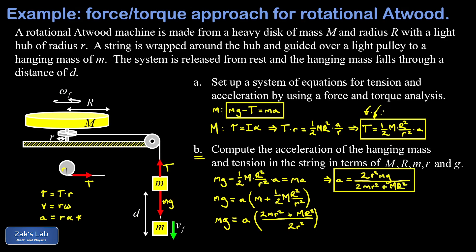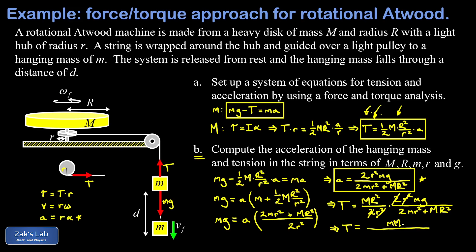To find T, we plug back into the second equation from part A: T equals big M big R squared over two little r squared, multiplied by the acceleration we just found — two little r squared times little mg divided by two little m little r squared plus big M big R squared. The r squared terms and the twos cancel, giving T equals little m times big M times big R squared times g, divided by two little m little r squared plus big M big R squared.